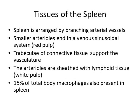The spleen is divided into white pulp and red pulp, and it's almost as if the functions of the spleen are divided between these two colors of pulp. We have all these branching arterial vessels going through the spleen, and these arteries feed into venous sinuses — this is referred to as the red pulp. There's lots of connective tissue around this vasculature, and lymphoid tissue embedded in the connective tissue, referred to as our white pulp. Our white pulp is quite macrophage-rich; in fact, about 15% of all our macrophages are actually in the spleen.